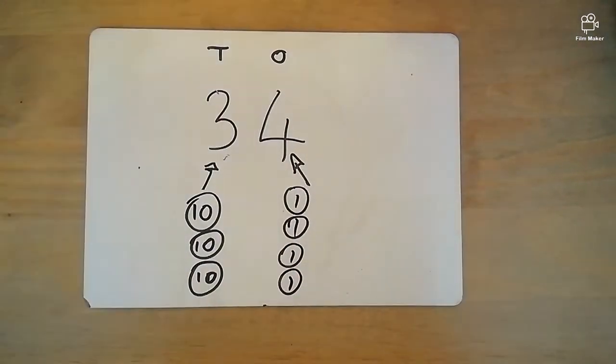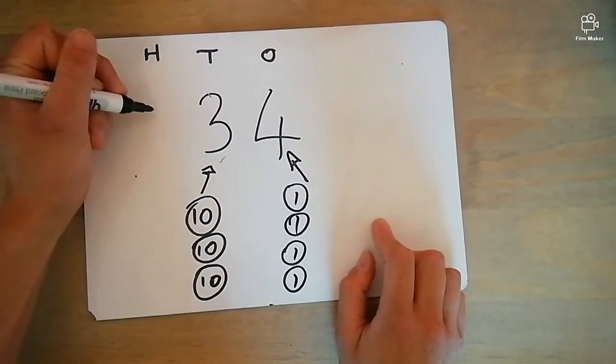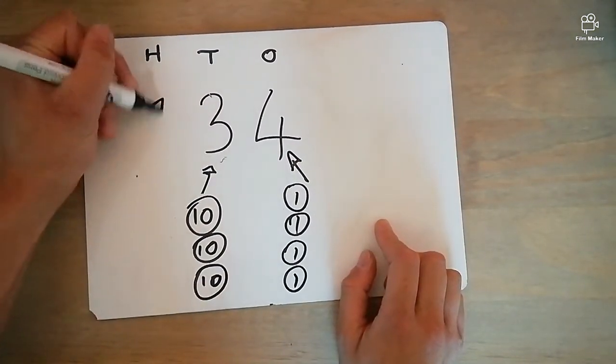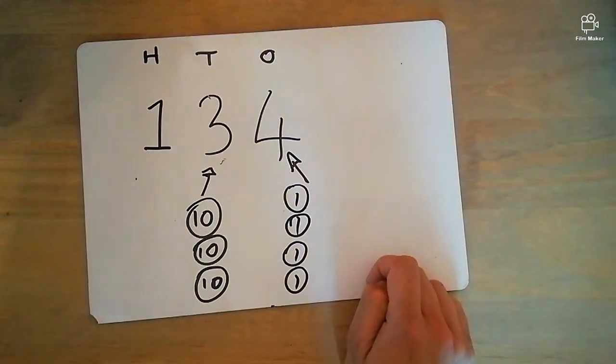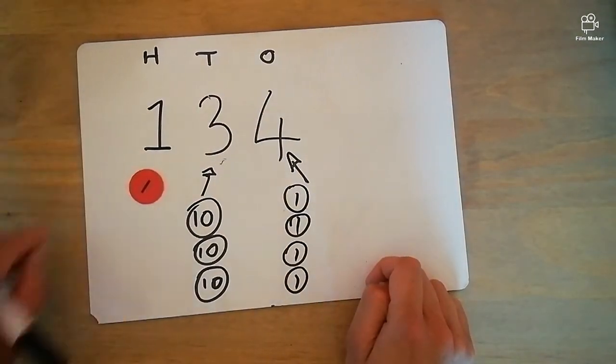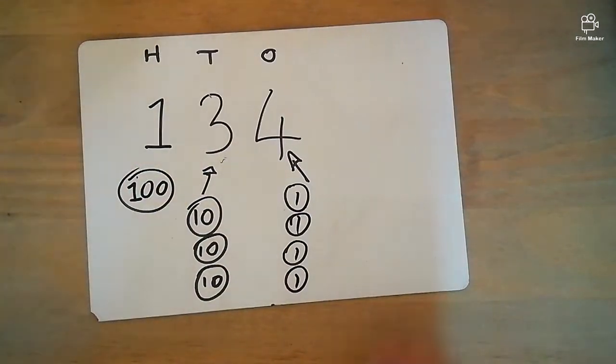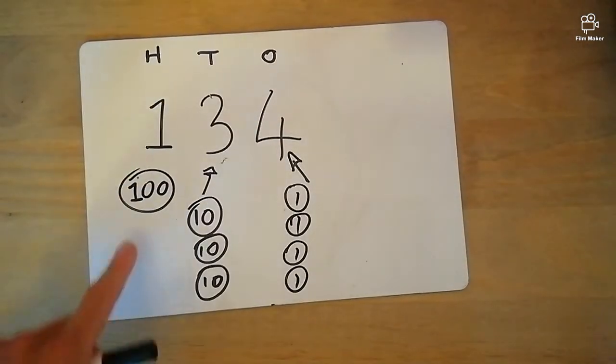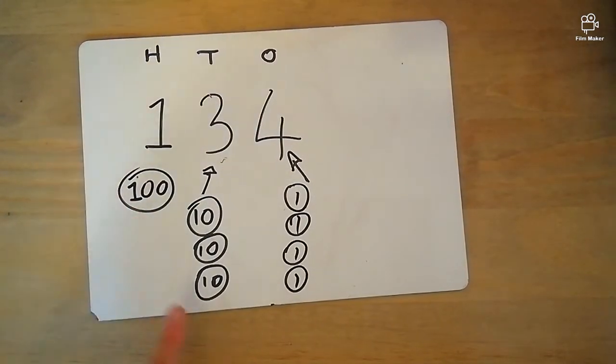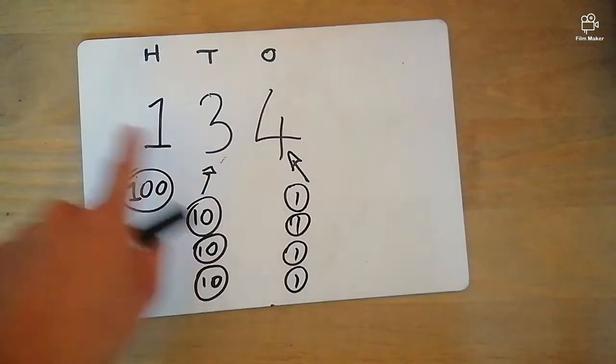If they're really getting the hang of this, we can push a little higher and go into our hundreds column. So, as I'm sure you can imagine, the one in this number isn't the number one, it's actually the number 100. So you can see from this, the 134 can be represented with one 100, three tens and four ones indicated by the initials at the top.